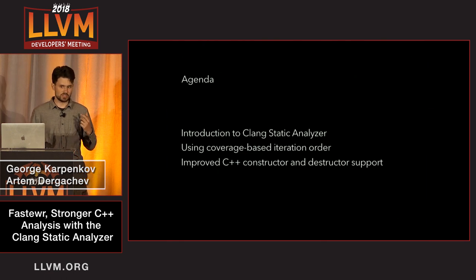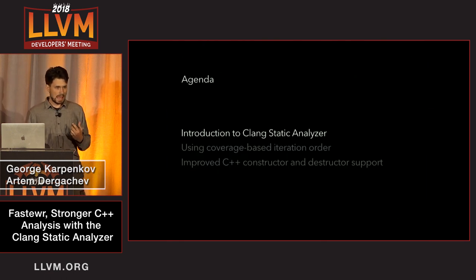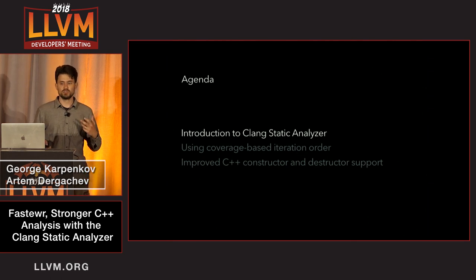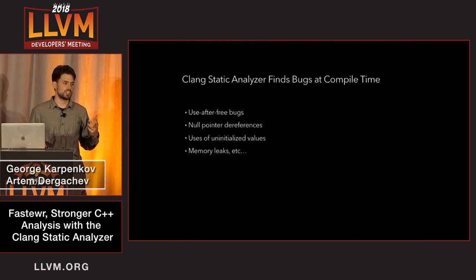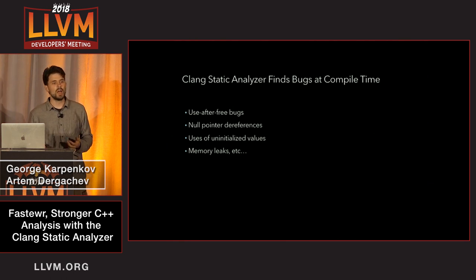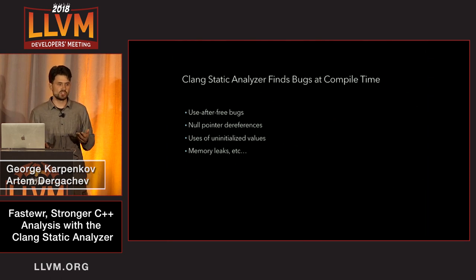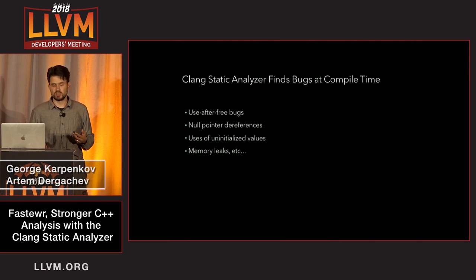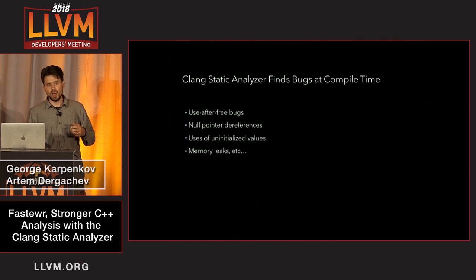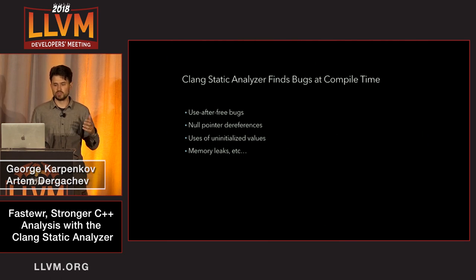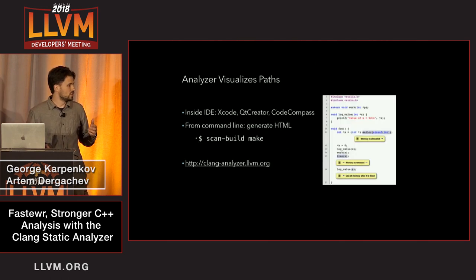The Clang Static Analyzer is a great tool to find all kinds of different bugs in a program statically at compile time without actually running the program. Those could be high-value security, potentially critical bugs such as use-after-free, or sometimes just crashing bugs like null-pointer dereference, or memory leaks, or many other kinds of bugs. When the Clang Static Analyzer finds a bug, it presents it to the user by generating a report.